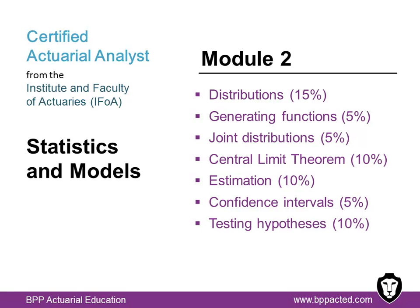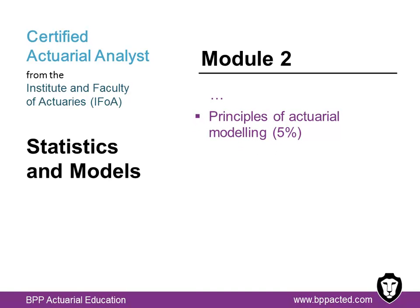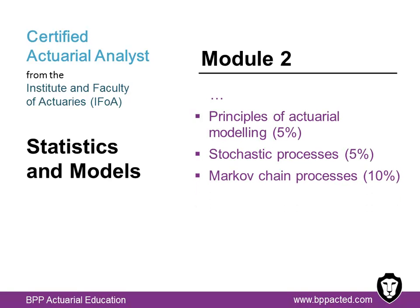Testing hypotheses, where you'll apply basic tests for one and two sample situations, including a chi-square goodness of fit. Analyzing the linear relationships between variables using correlation analysis and regression analysis — you'll be defining, calculating and interpreting the coefficient of correlation and the coefficient of determination, and using a simple linear model to predict values. The principles of actuarial modeling, where you'll describe the use of deterministic and stochastic models. Defining and giving examples of stochastic processes, and using simple stochastic interest rate models to find the mean and variance of an accumulated sum. Markov chain processes, where you'll use them to calculate stationary distributions in simple cases, including experience rating models such as no claims discount.